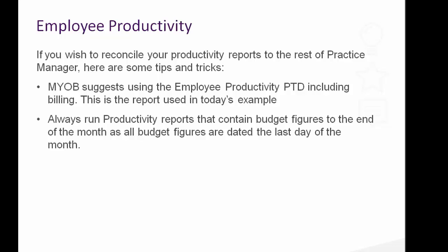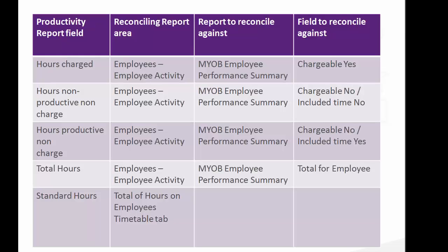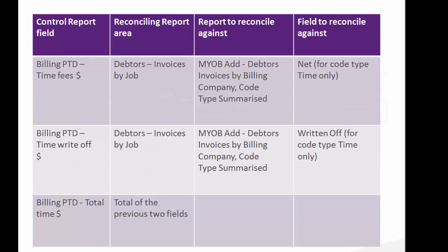Now once we've reconciled the Control Report, many practices reconcile the Productivity Report as well. If you are reconciling the Productivity Report, just remember: if you're including budget figures, always date the report to the end of the month because budget figures all date at the end of the month — that can cause some confusion. Also make sure that the productivity report you're using to reconcile doesn't have any filters on it, because that can cause some employees to be excluded from the report, which again can cause it not to reconcile. With those two things in mind, we have a table — but let's look at the pictures instead.